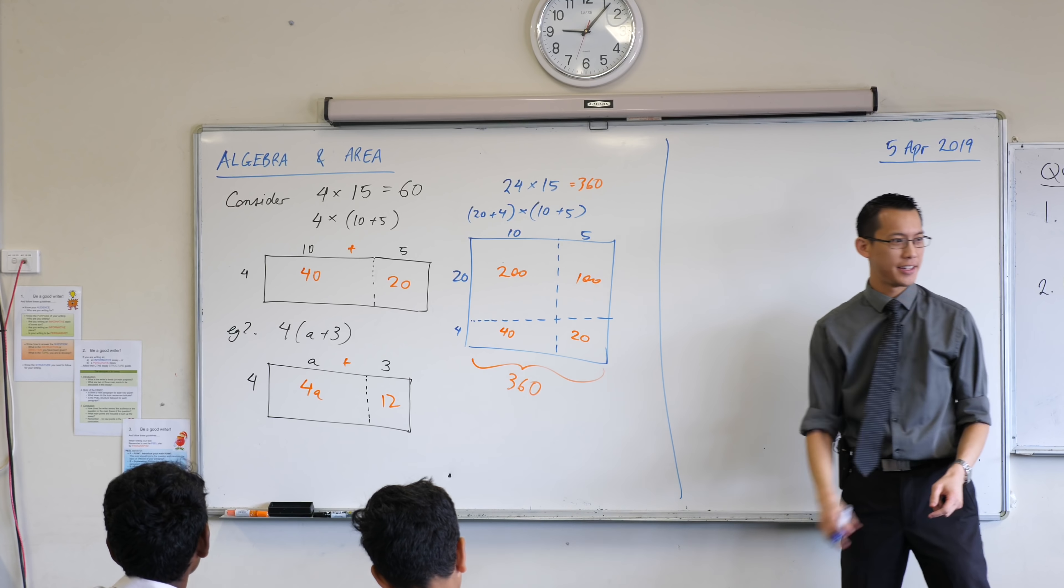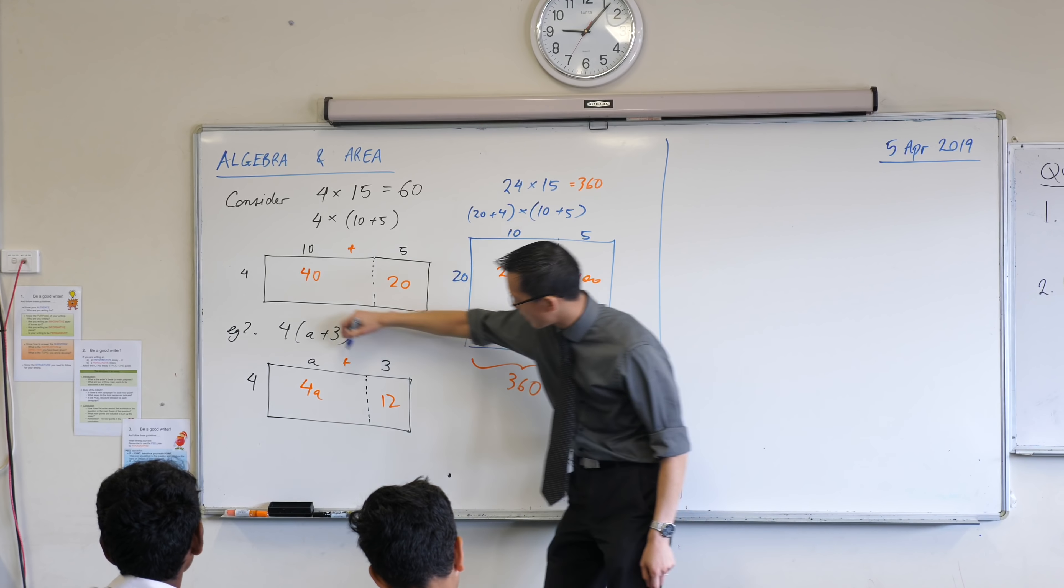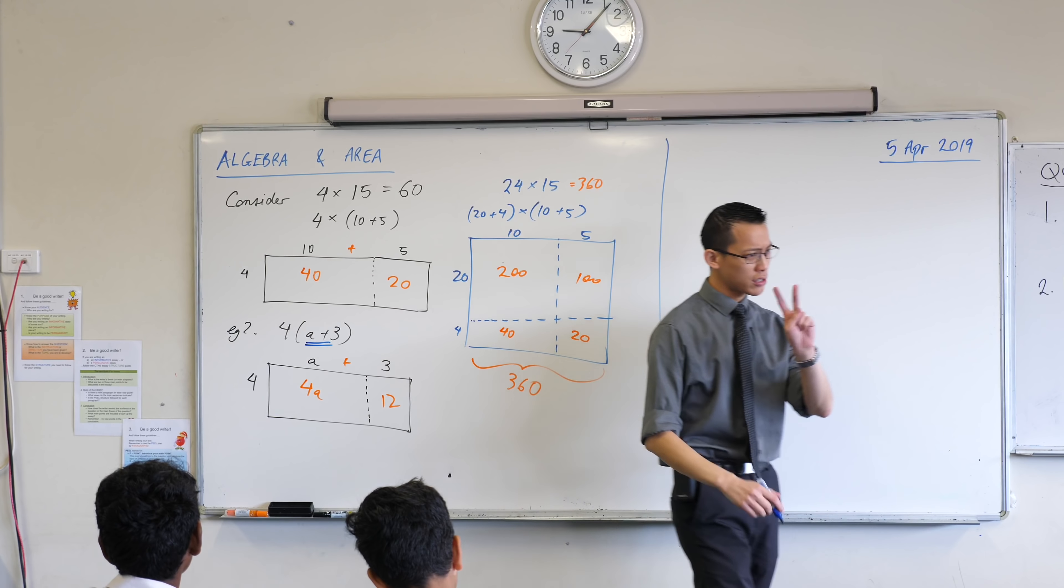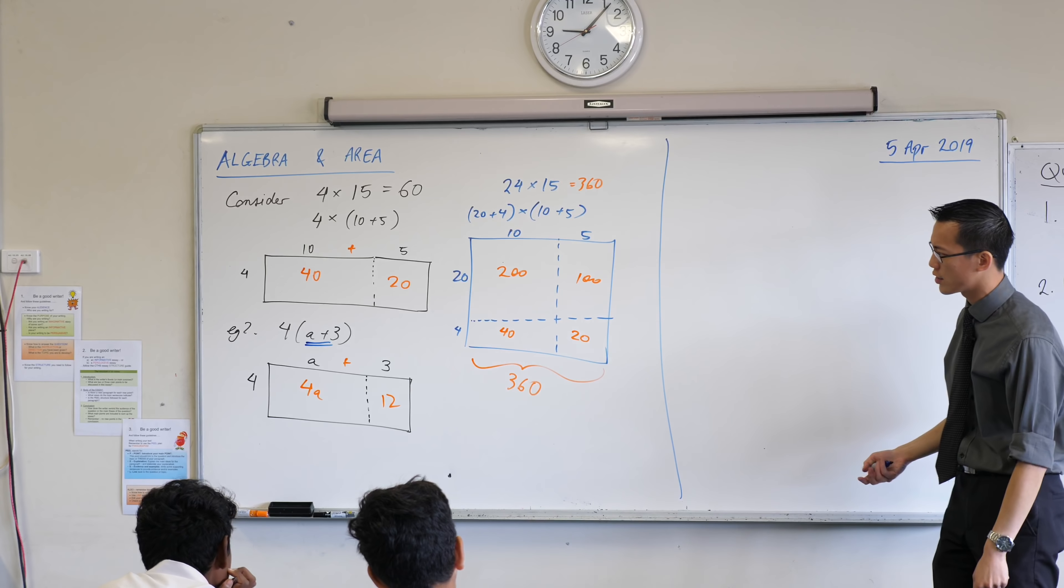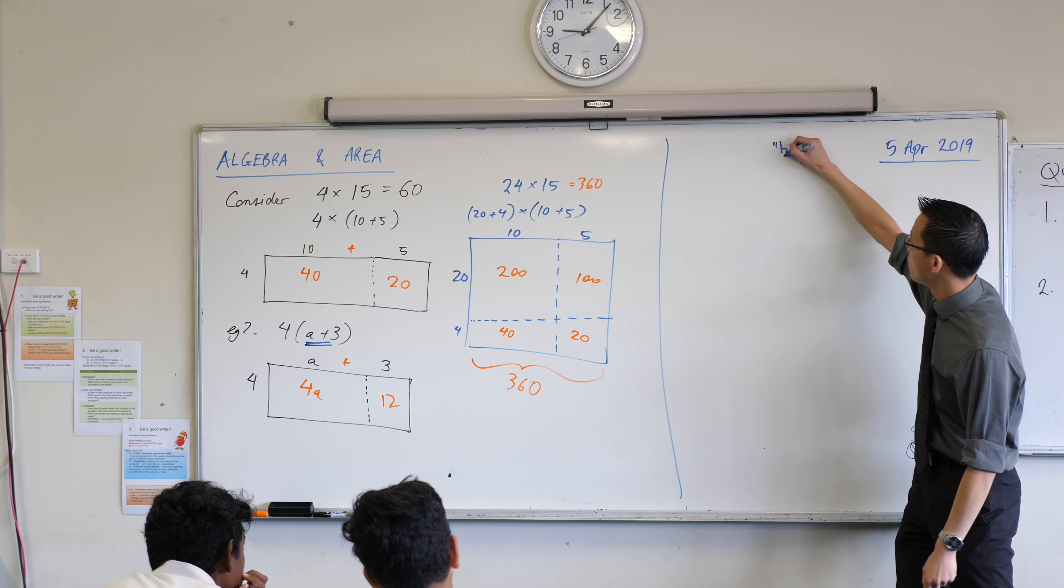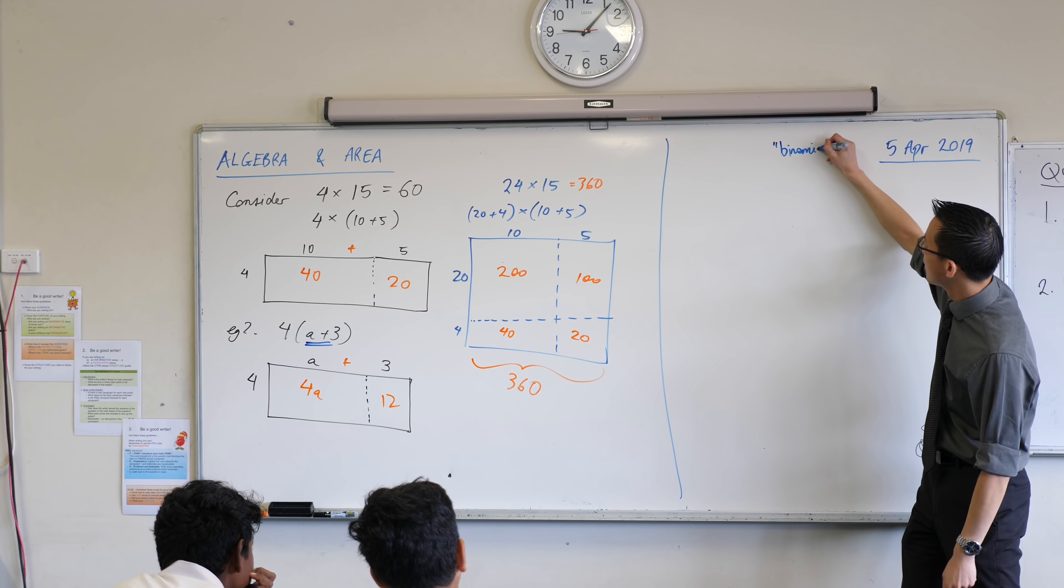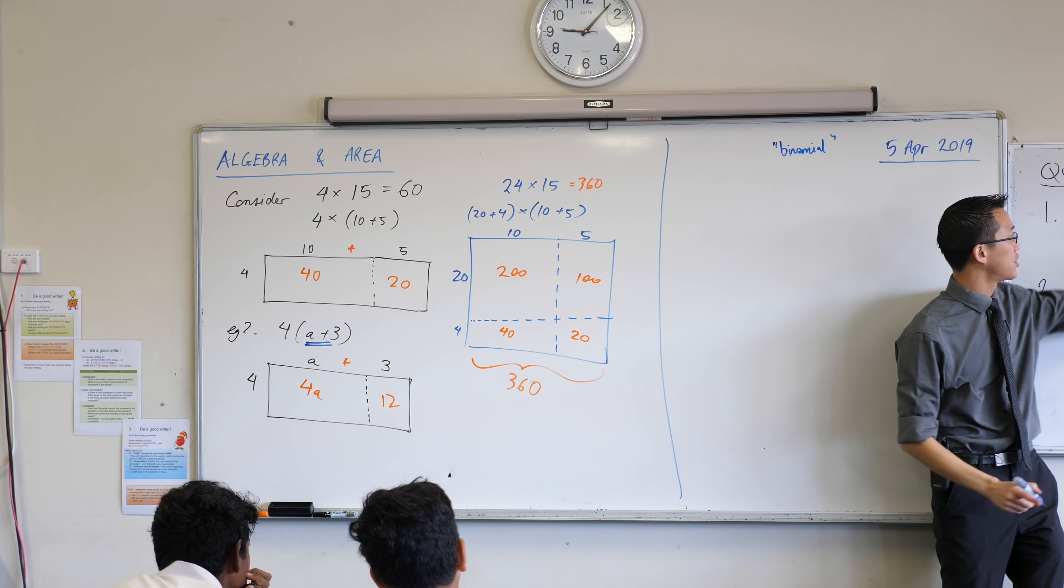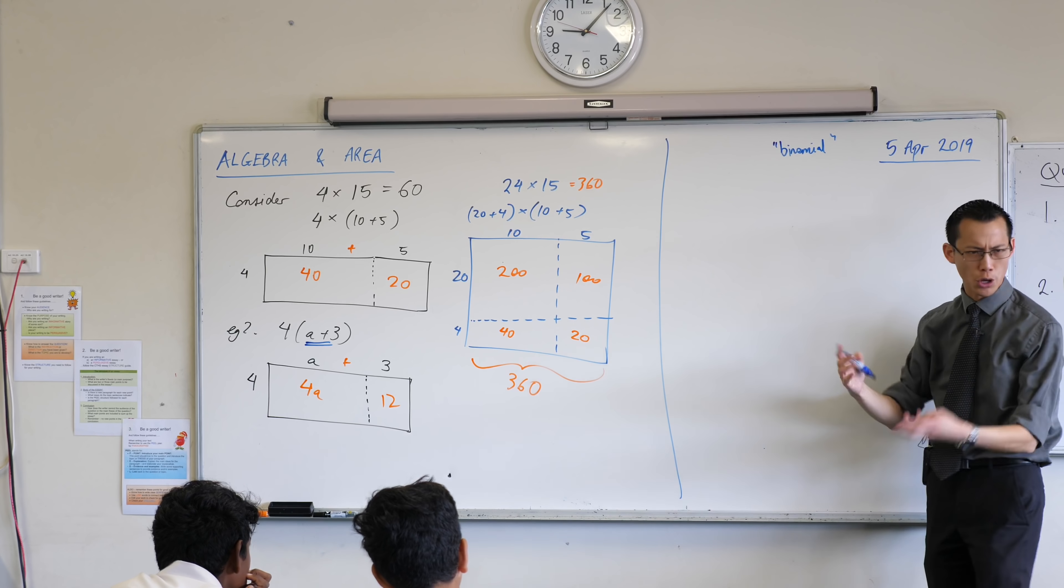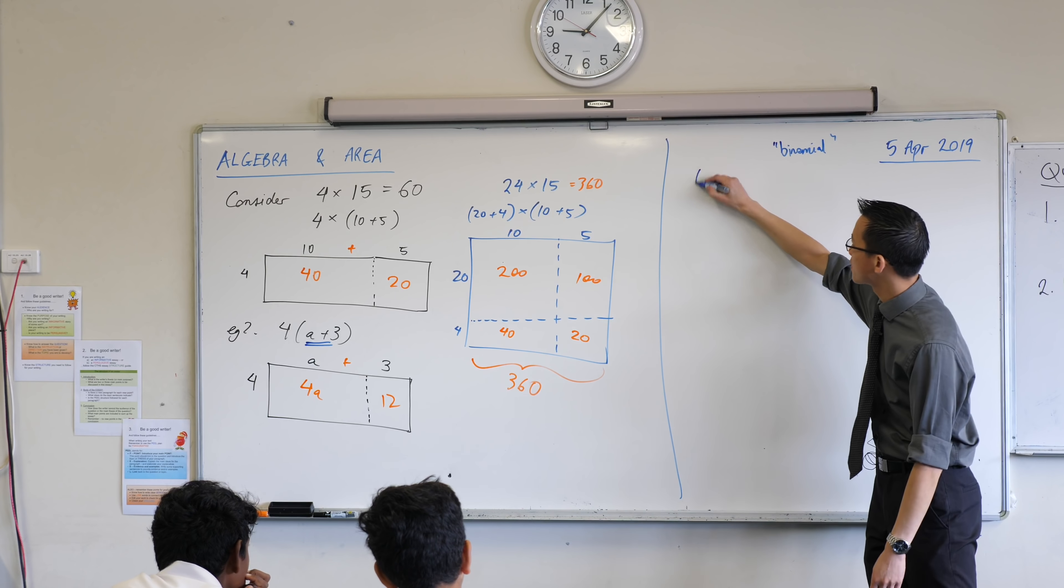What if I had, see that thing on the right hand side? This guy here? It's got two bits to it, two terms. So we call it, we give it a special name. It's called a binomial. You've seen bi already just means two, and anomial means two terms.